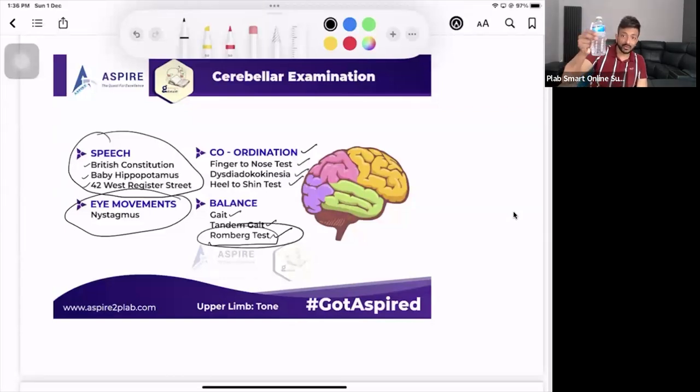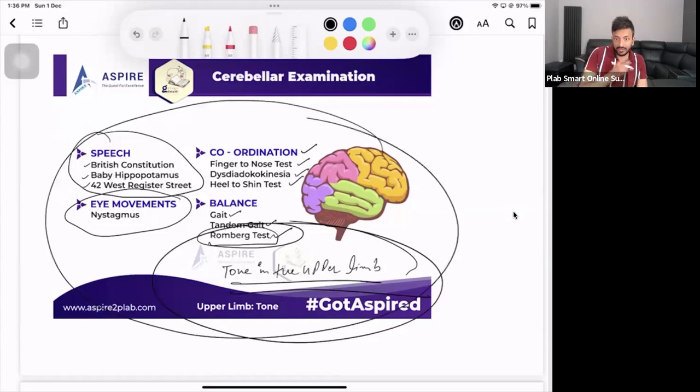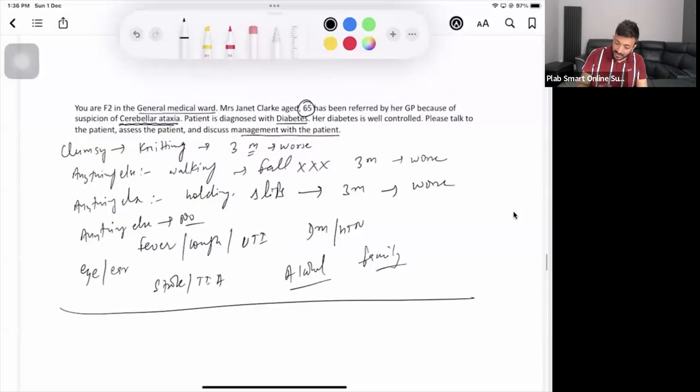Patient is having problem in holding things as well. I would like you to check the tone in the upper limb as well, right? So, these are the things that you can check. Now, you may not be able to do the full examination. Wherever you reach, it's okay. Now, the thing is, the management won't be different. Management will be what?